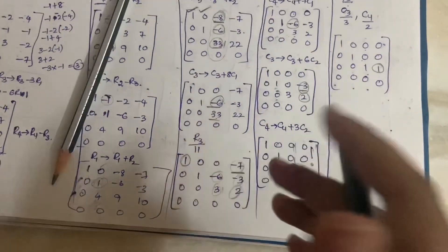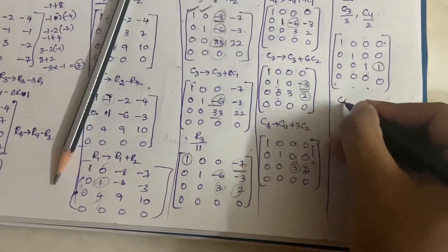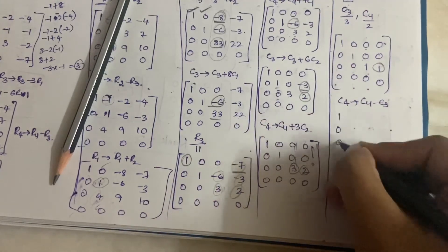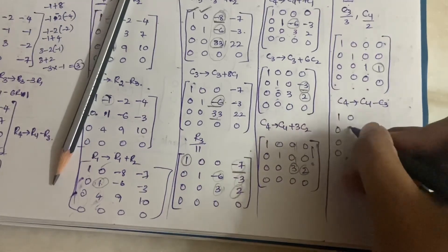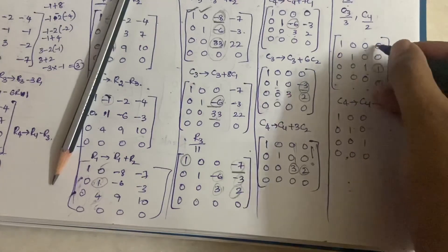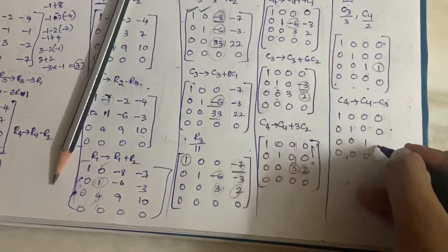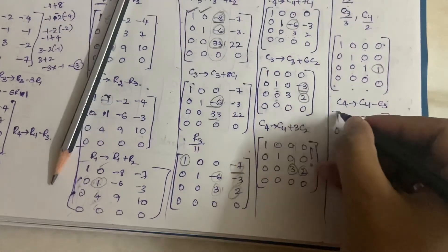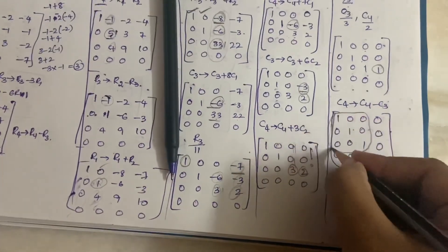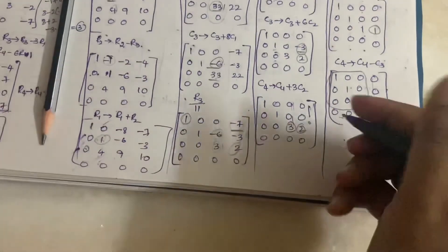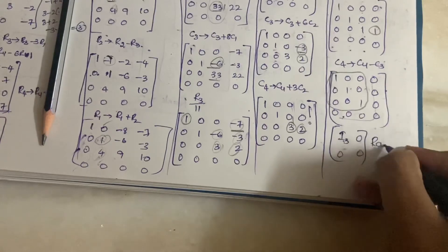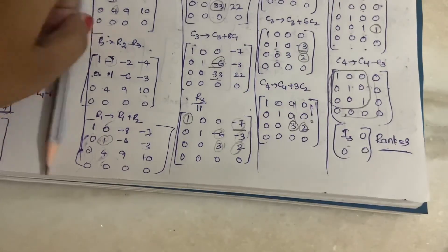The last step: make the remaining element zero. C4 becomes C4 minus C3, since 1 minus 1 = 0. The remaining three columns are the same. C4 minus C3 gives: 0, 0, 0, 0. So we get a 3×3 identity matrix surrounded by zeros, which is I3 with zeros — this is the normal form.